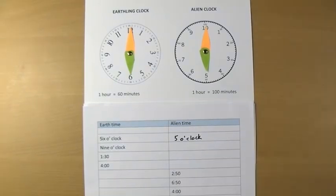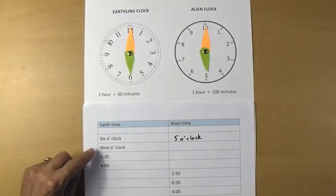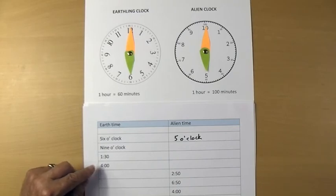Can you work out what time the alien time would be when Earth time is nine o'clock? Or one thirty? Or four o'clock? And now,